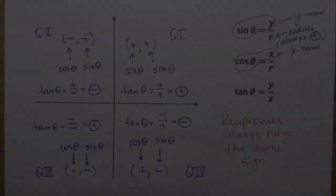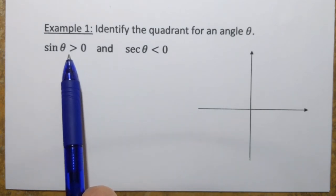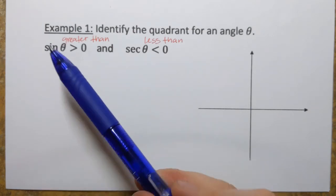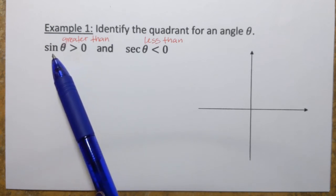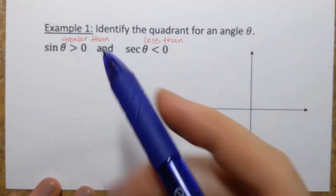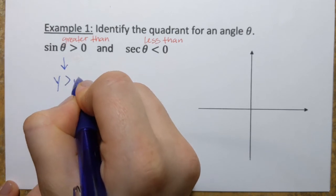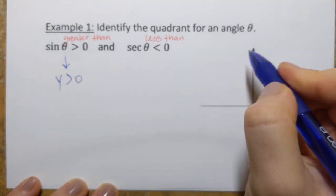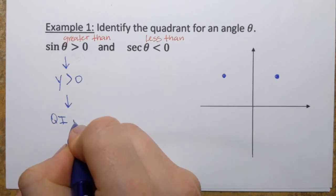Now let's do a few examples. We need to identify the quadrant for angle theta if sine of theta is greater than zero and secant of theta is less than zero. Let's take one clue at a time. Sine of theta is positive — sine is associated with the y-coordinate, so the y-coordinate must be greater than zero. The y-coordinate is positive in quadrant 1 and quadrant 2, so from this clue, the angle is in quadrant 1 or quadrant 2.